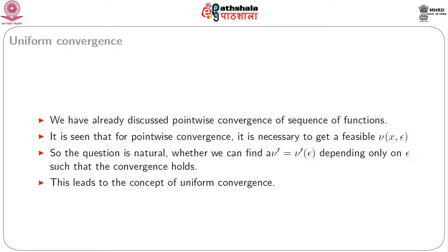We have just seen what is pointwise convergence and seen some examples. For pointwise convergence, it is necessary to get a feasible choice of ν(x, ε). The question is natural whether we can find a ν' depending only on epsilon such that the convergence holds. In a way, we want to know whether we can find some n independent of x retaining the property of convergence. This leads to the concept of uniform convergence.